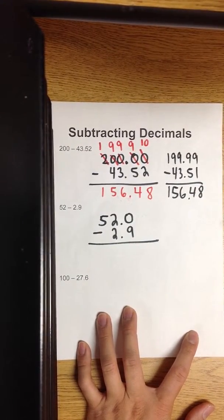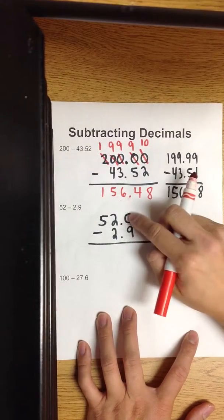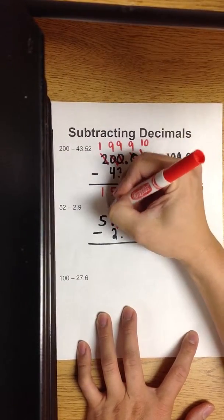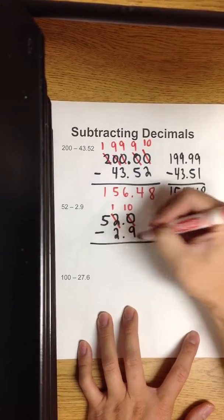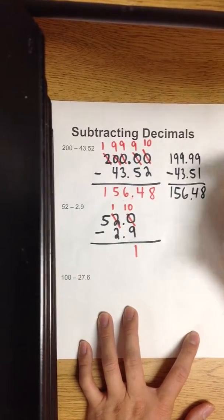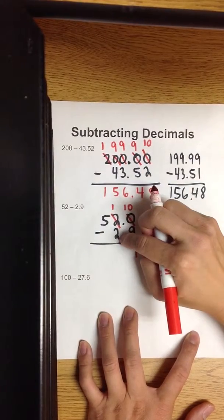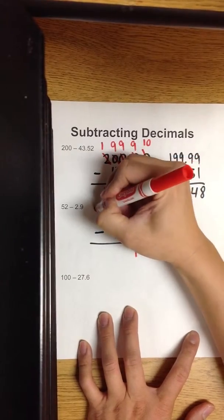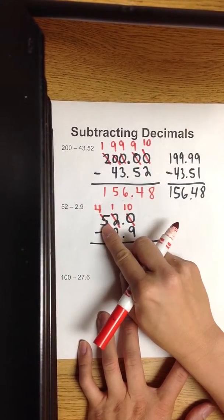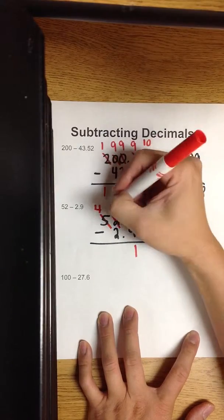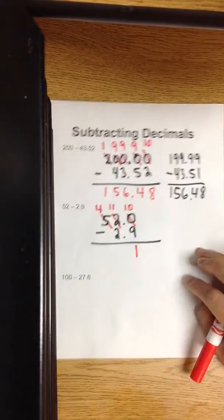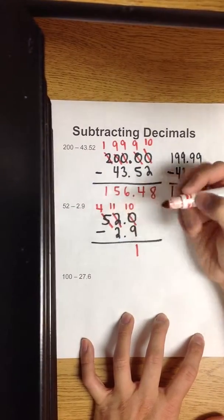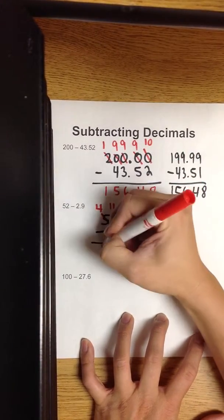Time to regroup again. Can you take away nine from the zero? Nope — got to regroup. This two becomes a one, and this becomes a ten. Ten minus nine is one. Can you take away two from this one? Got to regroup. Five becomes a four, and then you're taking away one — putting it here. And that becomes eleven tens. Eleven minus two is nine. And bring down a four.